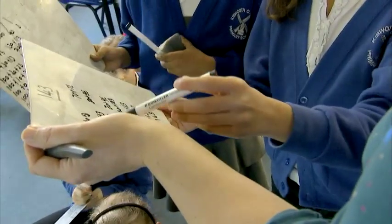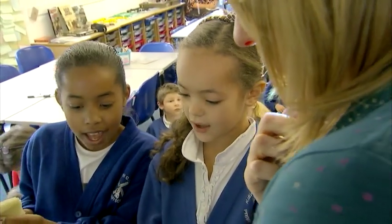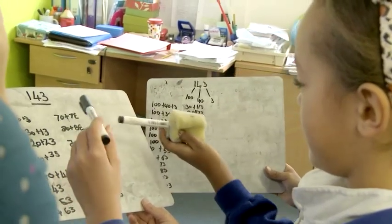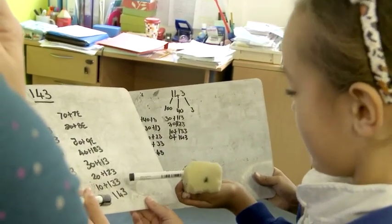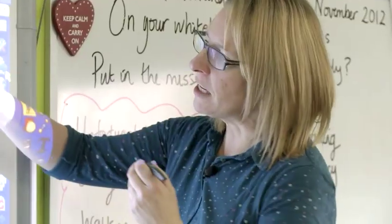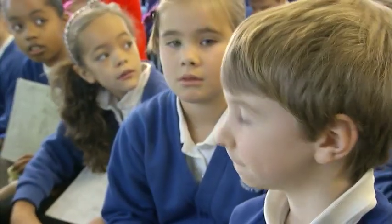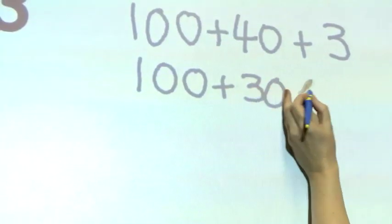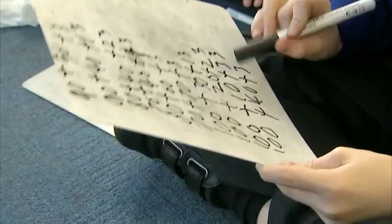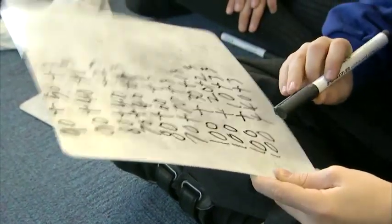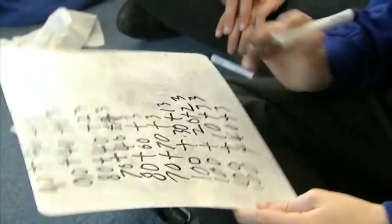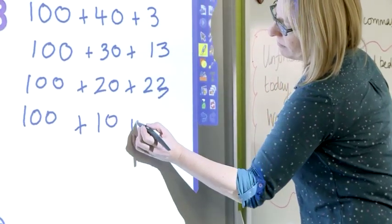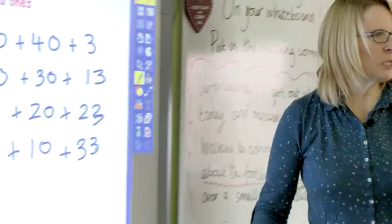We started with a hundred and forty and three. How did you continue the pattern, Jamie? I did one hundred and thirty add thirteen, one hundred and twenty add twenty-three, one hundred and ten add thirty-three — and then that's it, so that's the end. Who would like to explain what Jamie's thinking was?